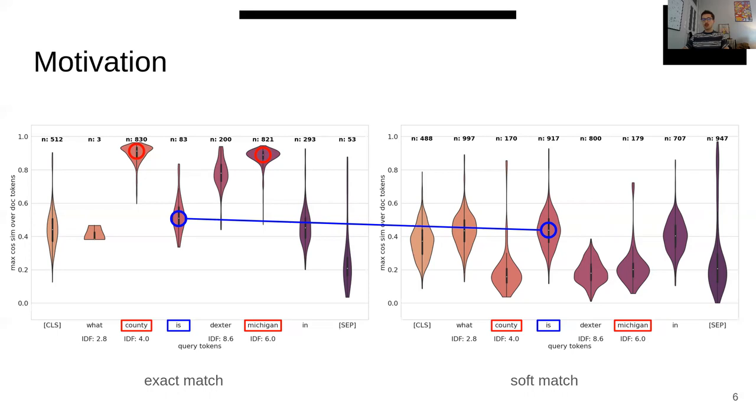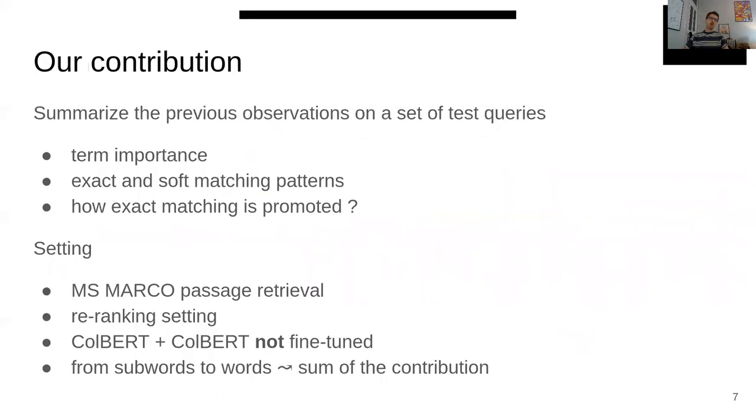On the other hand, we have some terms that carry less content, like 'is' in the example. These terms tend to focus more on soft matching, and we can see that the exact and soft distribution in this case kind of look the same. Our goal for this analysis was to summarize these observations on a set of test queries by looking at two aspects: term importance and exact and soft matching patterns. We also investigated how exact matching is promoted for important terms in ColBERT.